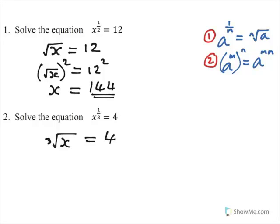So what we're going to do is cube both sides, and that's what we get. And if we cube the cube root of x, we get x, and 4 cubed is 64.